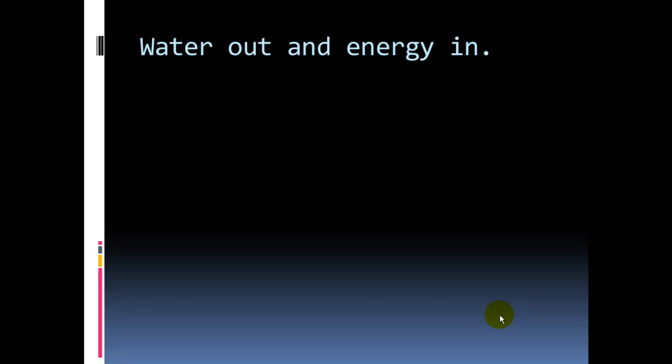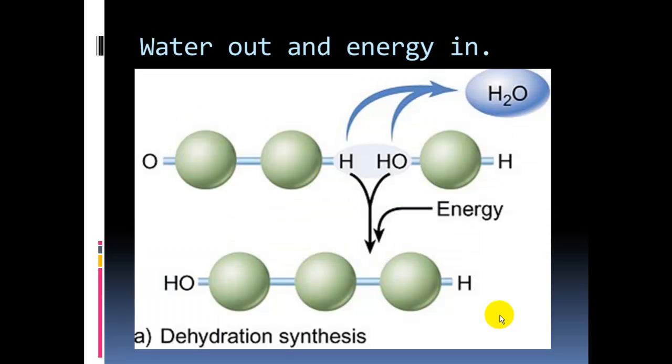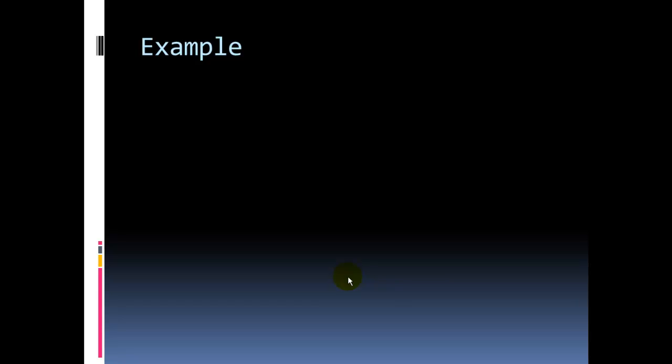So, water out, energy in, and this is the schema that we're going to see. We're using these spheres, right, like beads. These are the individual monomers, and we are putting them together. We're seeing them being joined here. Water comes out, and we make a bond, a single bond here, between these two monomers.